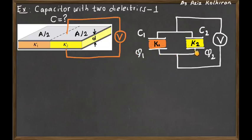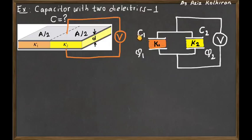The lower potential for both separations will be the same, because they are connected by a wire. When you look at this configuration, which is equivalent to the original capacitor, it is nothing but having two capacitors C1 and C2 — with dielectric constants K1 and K2 — connected in parallel to each other.